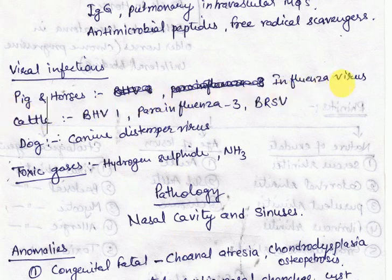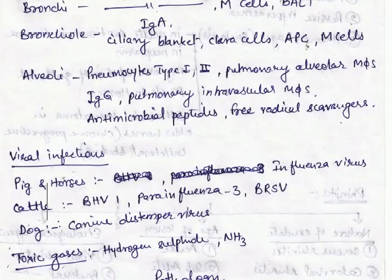First, viral infections. Viral agents predispose humans and animals to secondary bacterial pneumonias by viral-bacterial synergism. In humans, a good example is the influenza virus, in which the mortality rate is significantly increased due to secondary bacterial pneumonia.